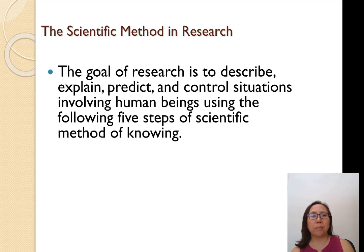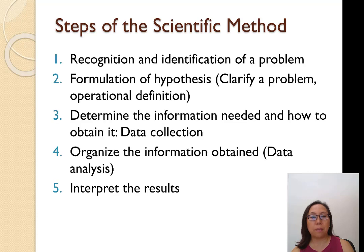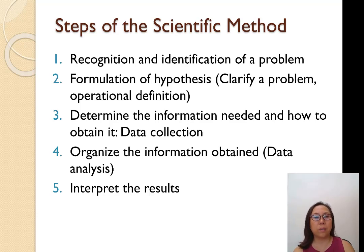The goal of scientific method, as stated earlier, is to describe, explain, predict, and control situations involving human beings. Scientific method involves five steps: (1) recognize and identify a problem; (2) formulate the hypothesis by clarifying the problem and operationally defining key terms; (3) determine the information needed and how to obtain it — data collection; (4) organize the information — data analysis; and (5) interpret the results and draw conclusions.